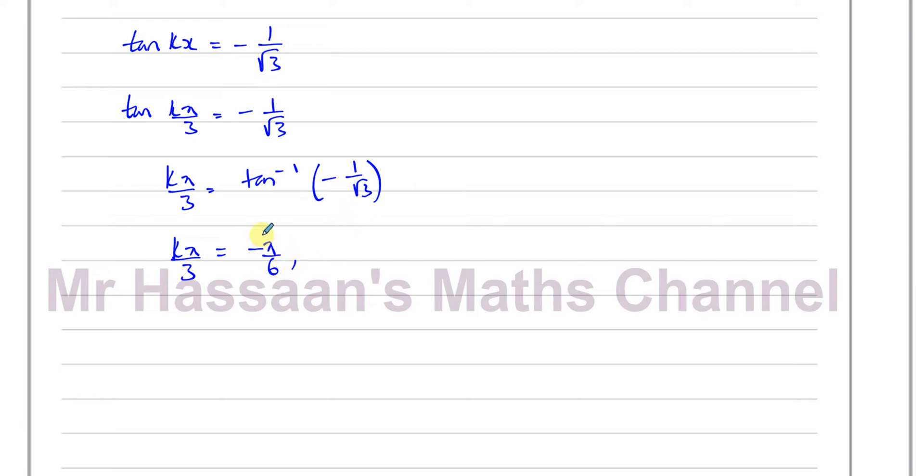This is the principal solution, which is negative π over 6. Now for the tan curve, other solutions are found by... it repeats every 180 degrees. So if I do minus π over 6 plus π, every π repeats, that's going to give us 5π over 6.